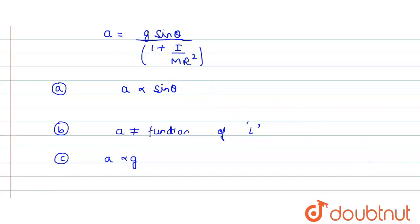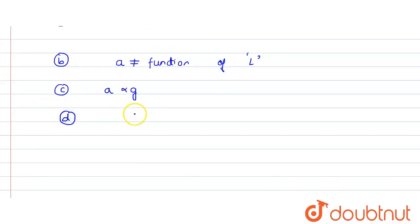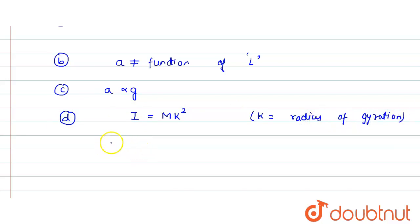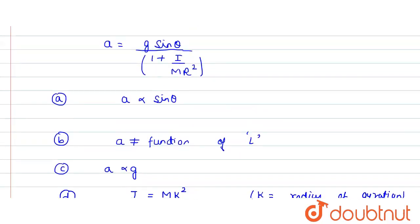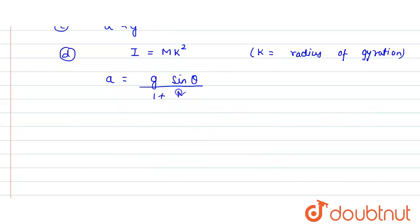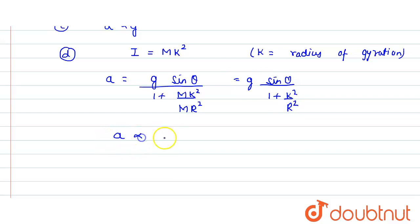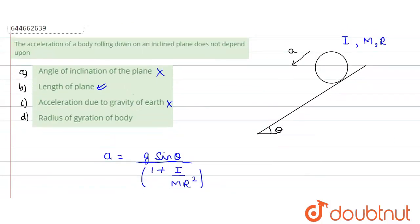For option D — does it not depend upon radius of gyration? It is actually dependent upon radius of gyration. We know that moment of inertia is related to radius of gyration by I equals mk squared, where k is the radius of gyration. Substituting into our formula: acceleration equals g sine theta divided by 1 plus mk squared over mr squared, which simplifies to g sine theta divided by 1 plus k squared over r squared. So acceleration is dependent upon the radius of gyration k.